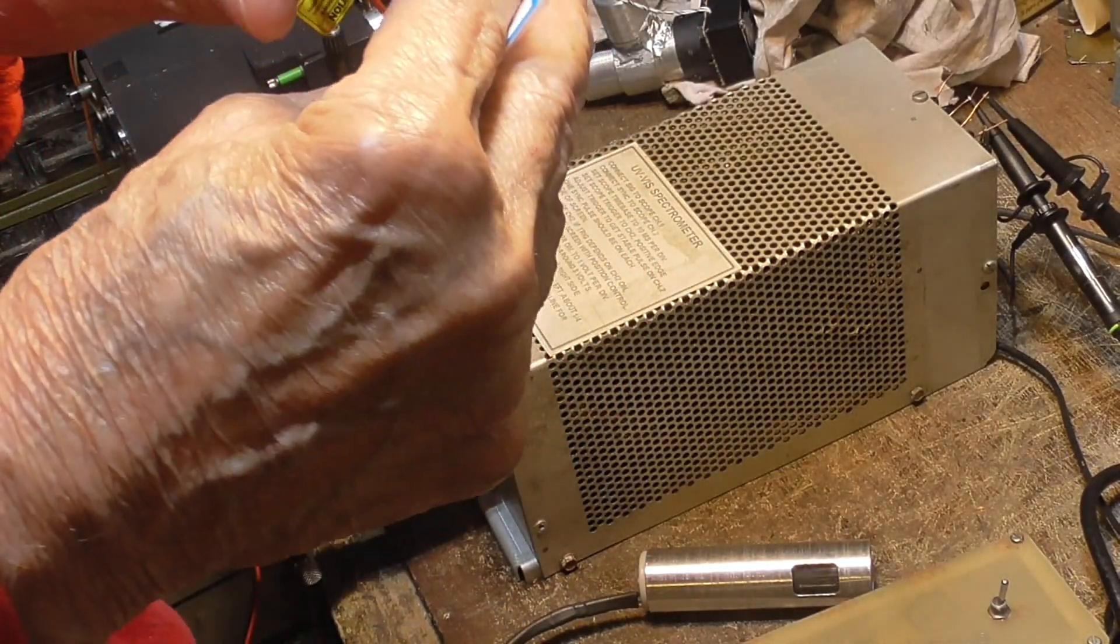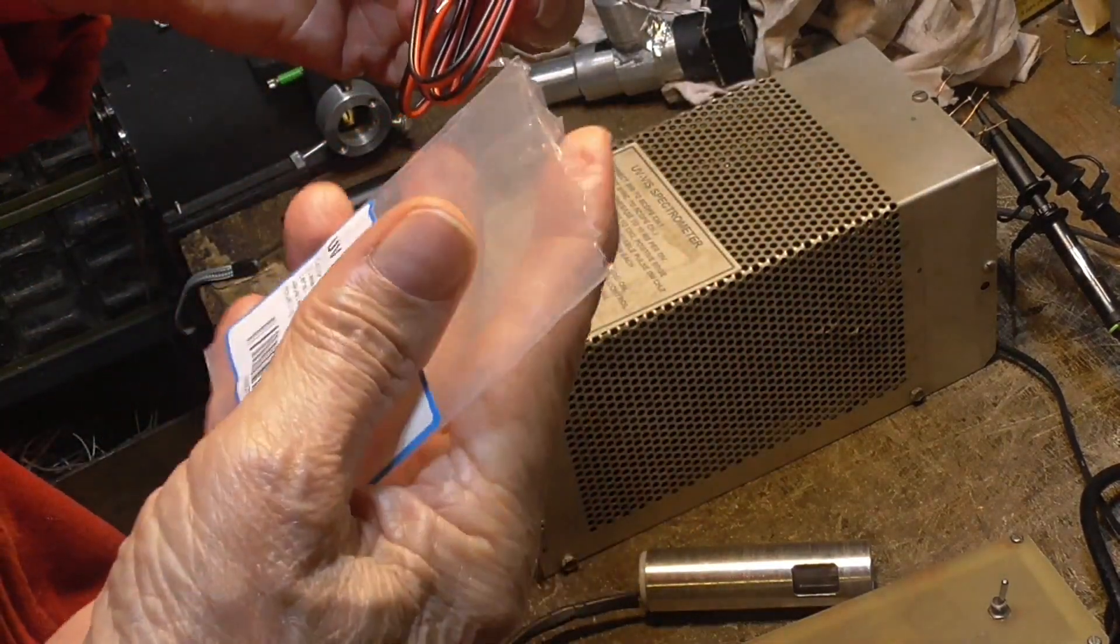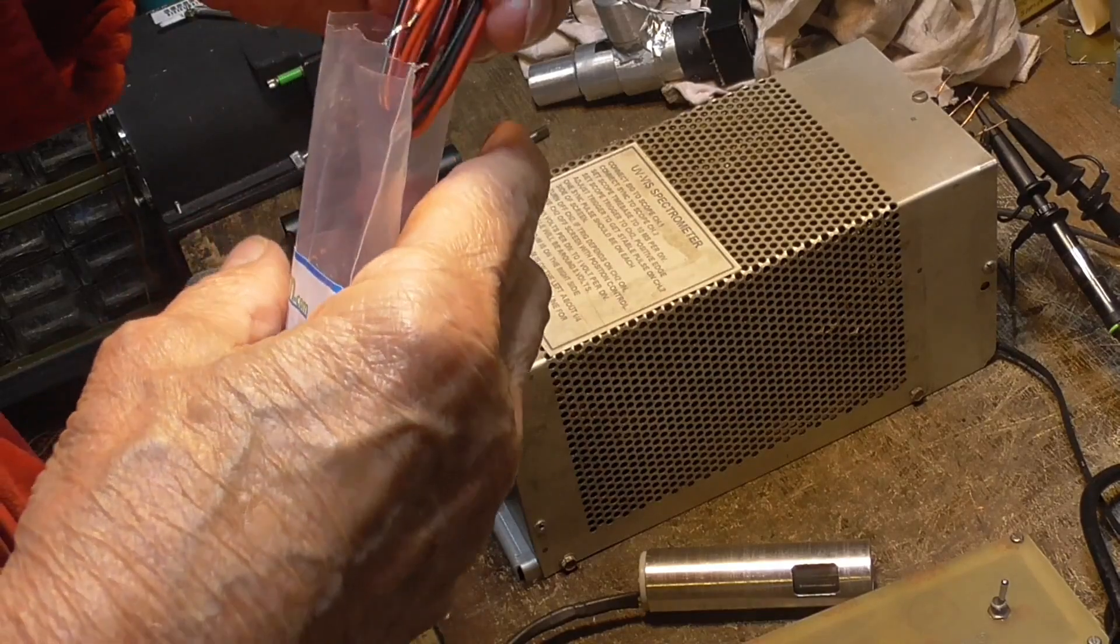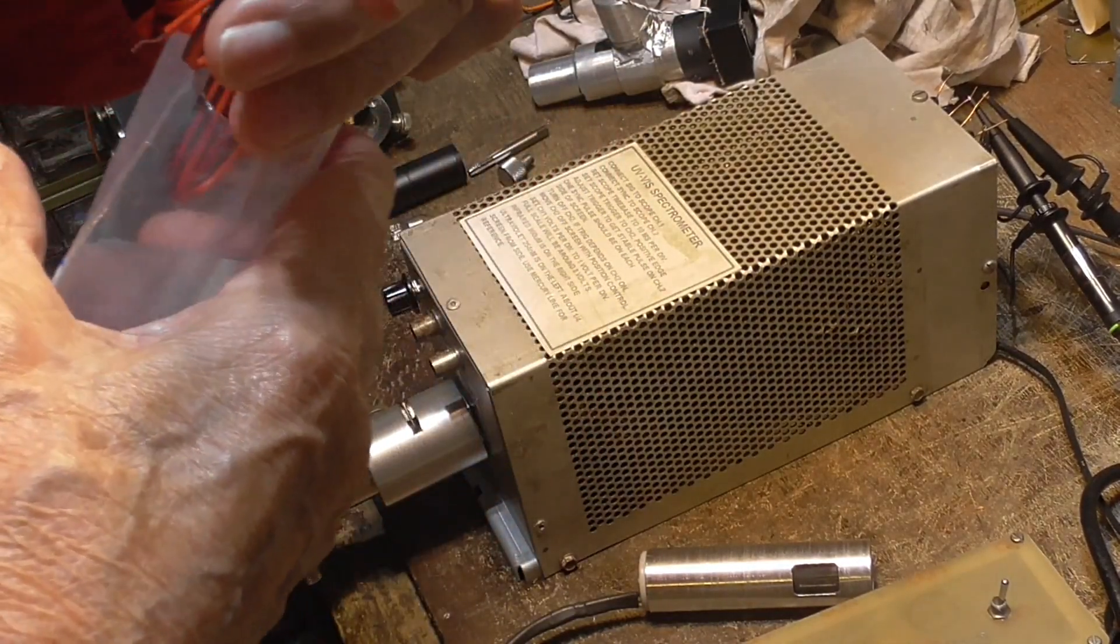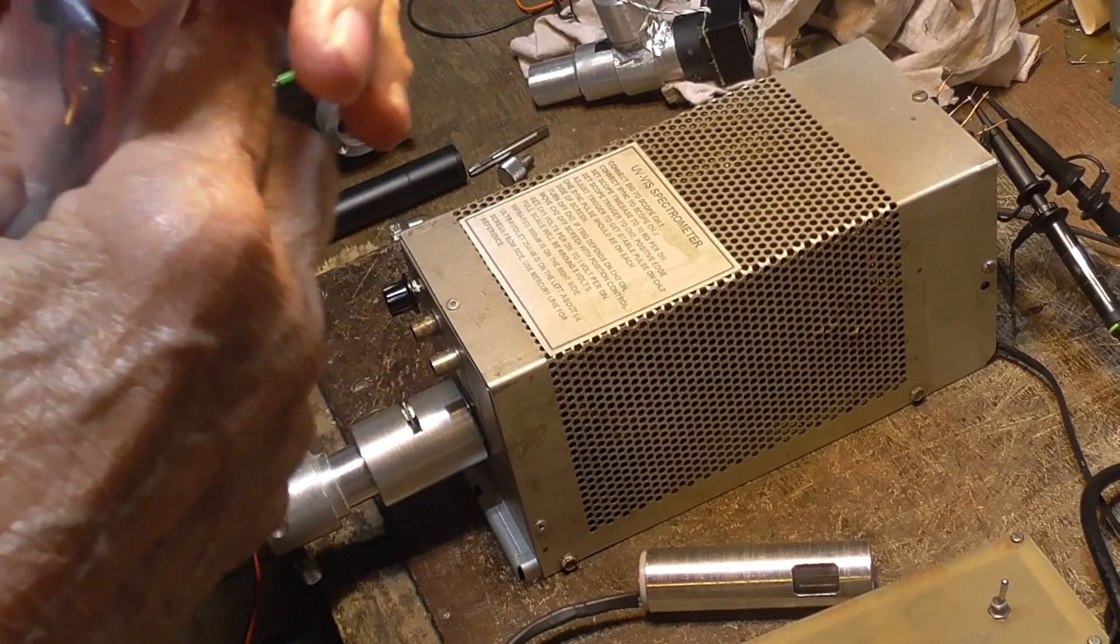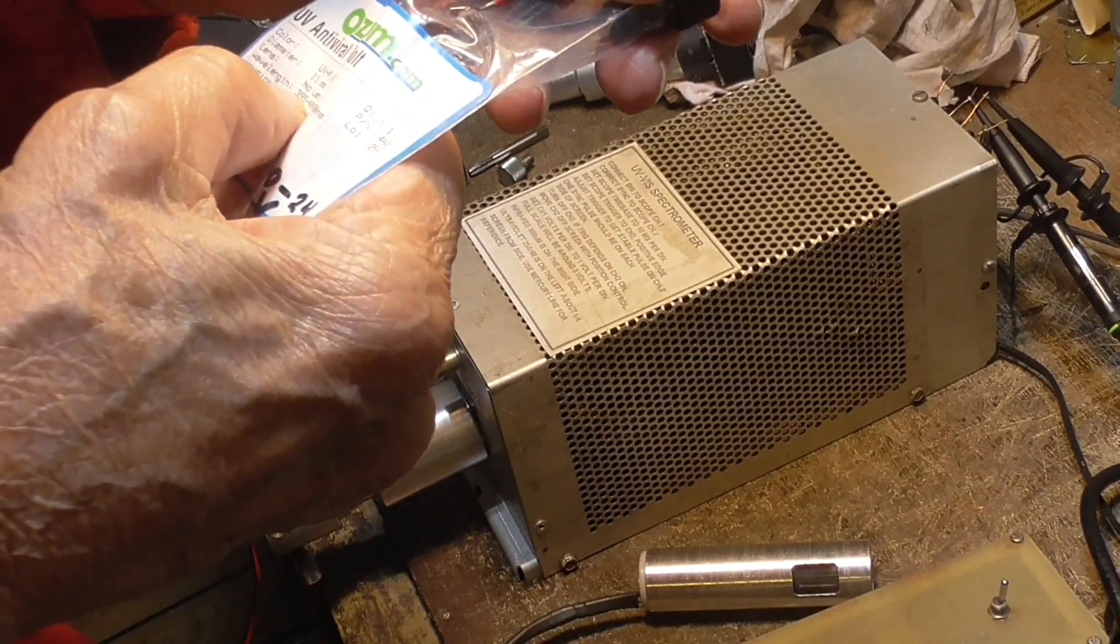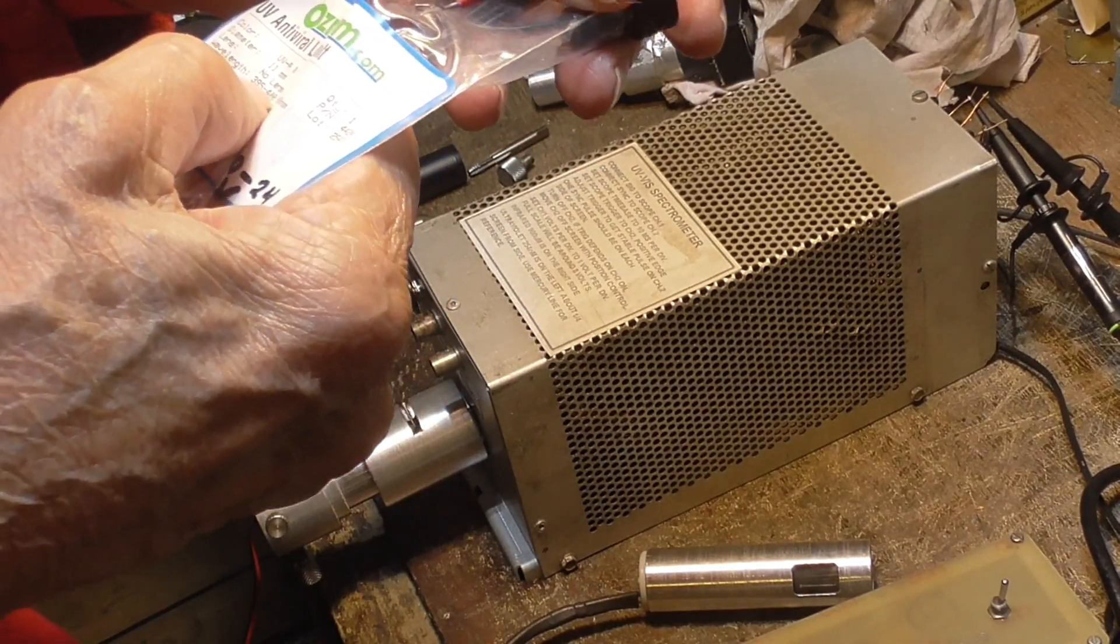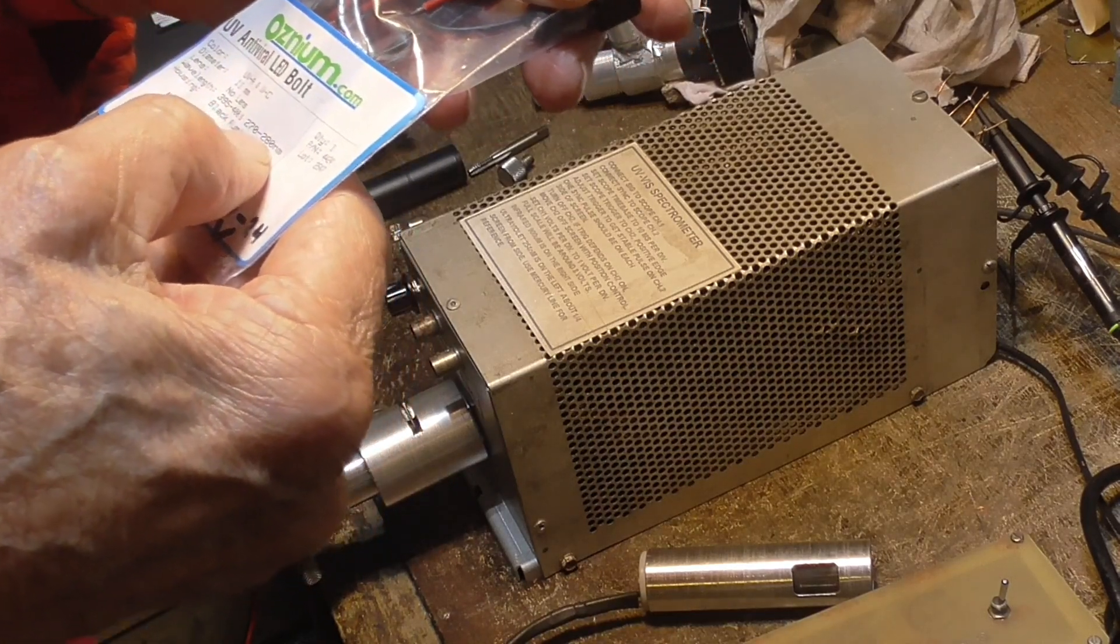These are ultraviolet LEDs that are on Amazon for under 20 bucks. And I wanted to see how they performed. Now, these have two LEDs in them. It's got one at 395 to 400 and another one is 270 to 280 nanometers.